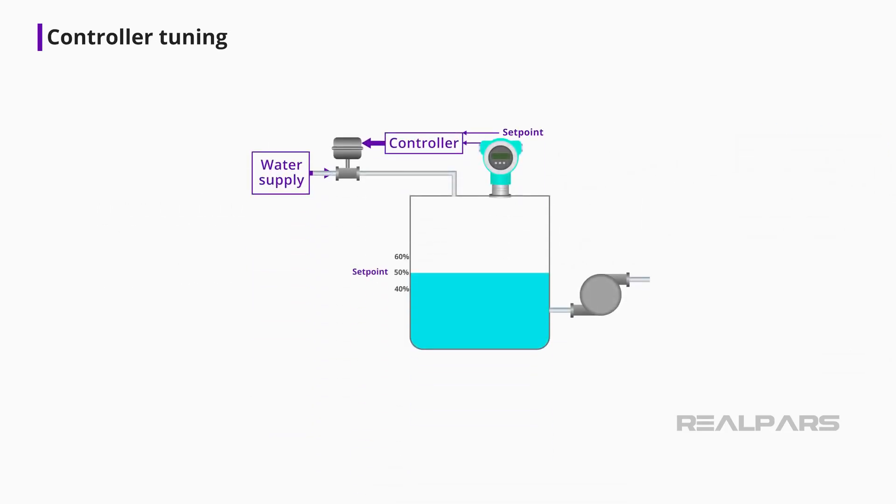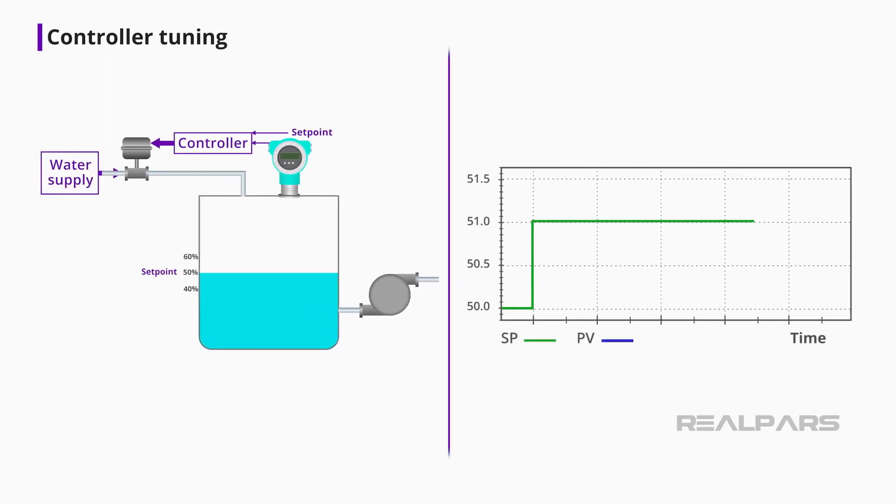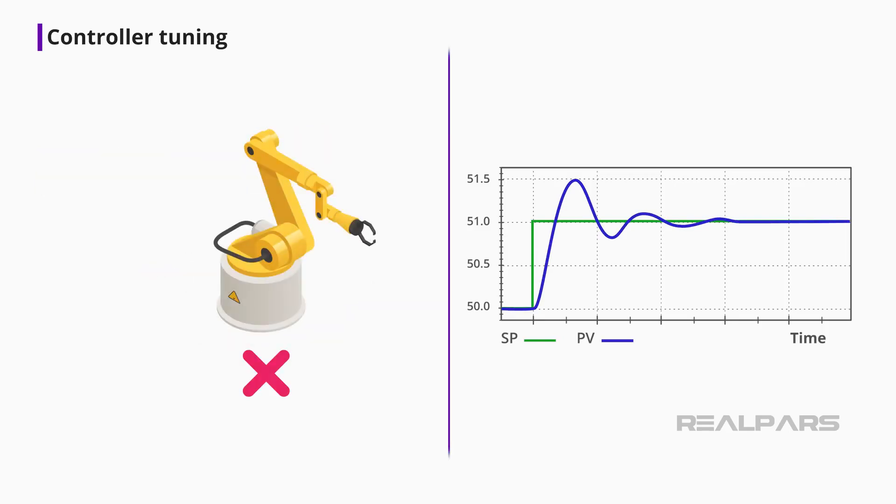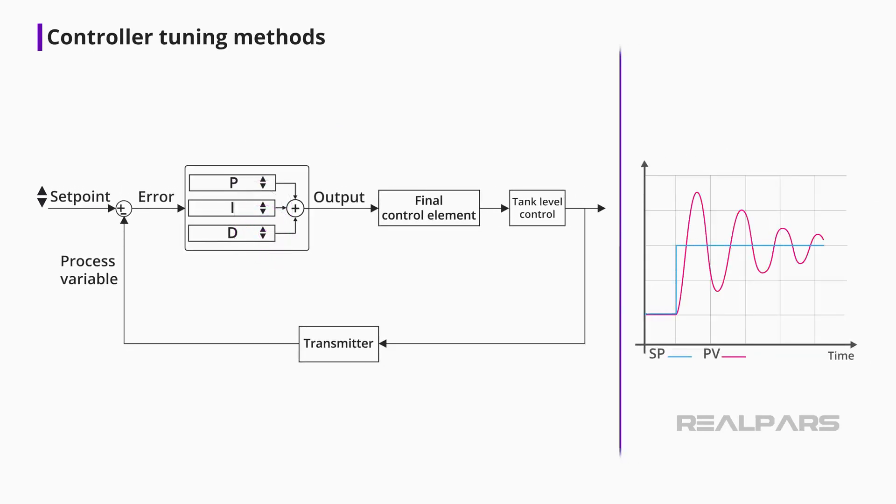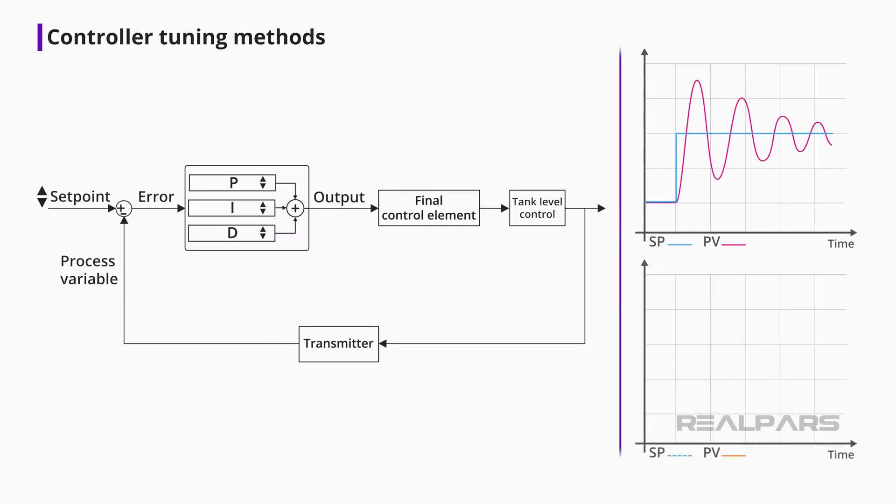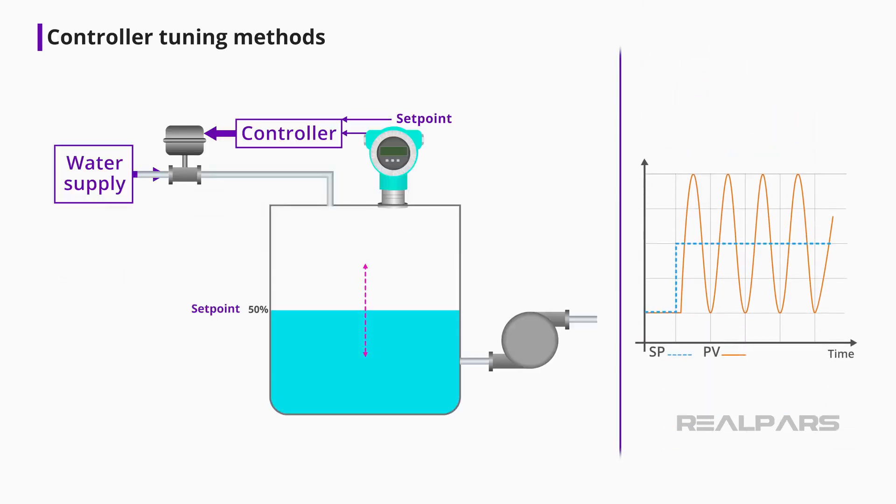For example, after the controller has been tuned, a setpoint bump of 1% in a tank-level control produces a quarter-wave damped response. This type of response may be suitable in a tank-level process, but could be disastrous in a motion control process. There are many different manual methods for tuning a controller that involves observing the process response after inflicting controller setpoint changes. One method involves increasing the amount of setpoint change and repeating the procedure until the process enters a state of steady-state oscillation. This method of tuning produces adequate results, but is often impractical in many applications. For example, how practical is it to force the fluid level in a large tank to reach a steady-state oscillation?